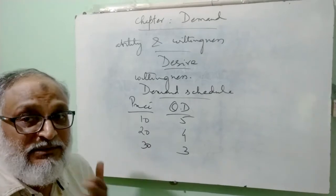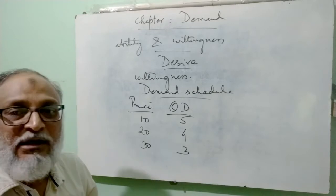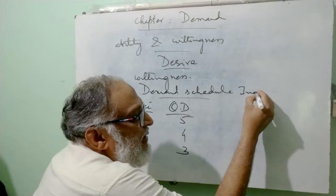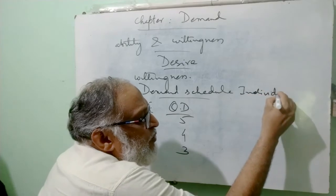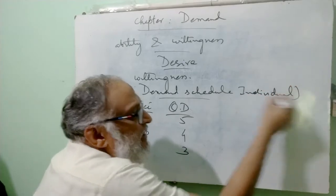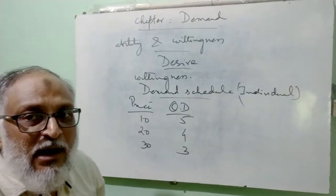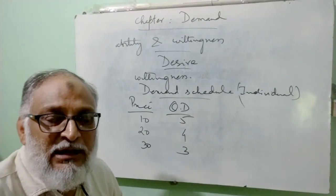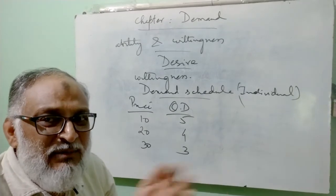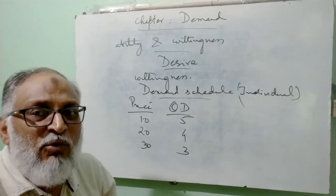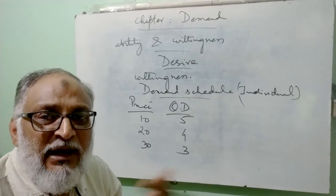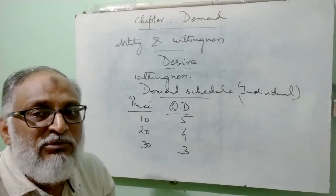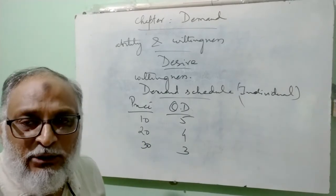Now demand schedule is of two types — individual and market. The difference between the two is small. Individual means here we are talking about one consumer — if the price of the product changes, what change will come in that consumer's behavior, how much will they increase or decrease their demand. If I show that in a table, it would be called individual demand schedule.